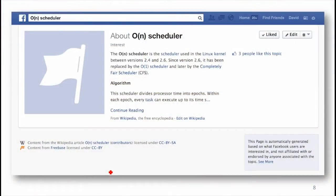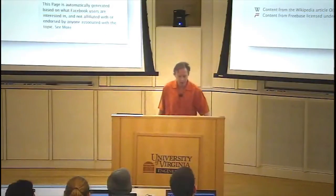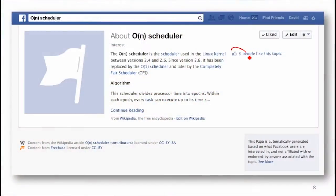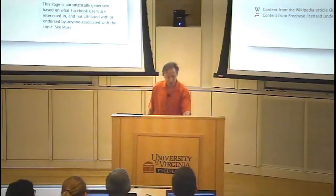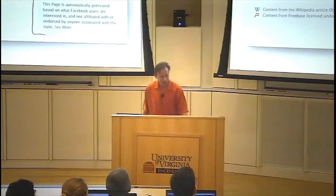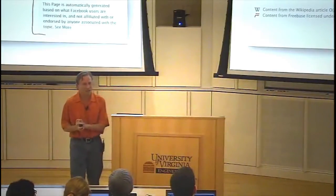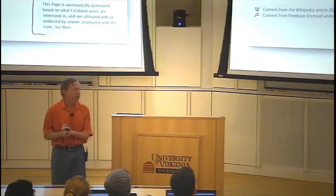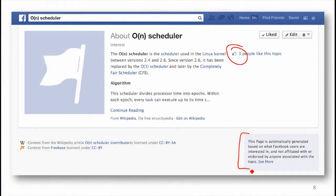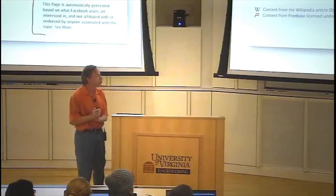And it's so popular, it has its own Facebook page that has three likes. It's more popular than me, at least. Apparently, it was automatically generated based on interest of Facebook users. I didn't know Facebook was crawling Wikipedia to generate new Facebook pages, but apparently they are. So the big O n scheduler was fairly popular, or at least it was the standard Linux scheduler until 2002.